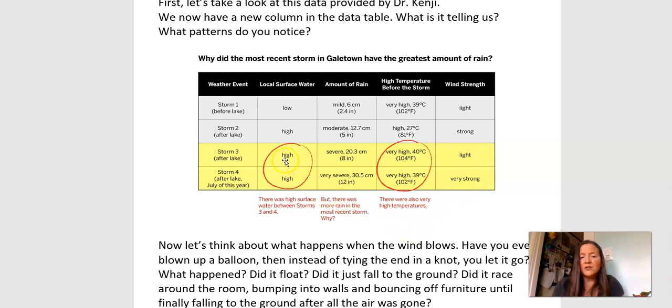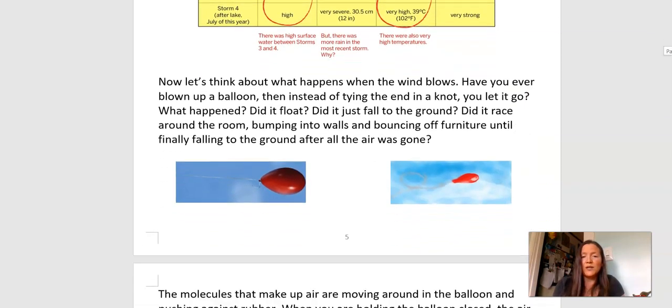What do I notice about the patterns in this table? Well, we have a high surface water and a high temperature, which is our chapter one and two information. And that's leading to different amounts of rainfall. So I see there's patterns there. And then the wind, the new column, well, we have some severe rain with light wind, but then we have some very severe rain, and I see that there's very strong wind. So I'm wondering if maybe wind is also going to be impactful on how much rain we have.